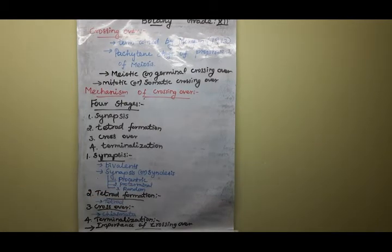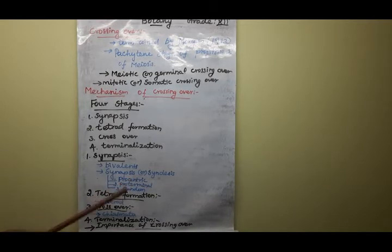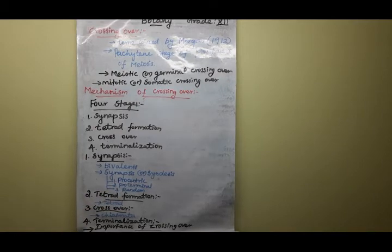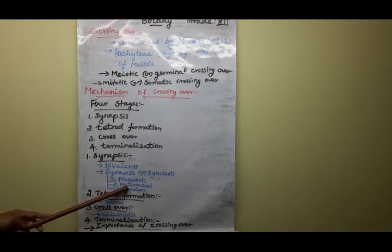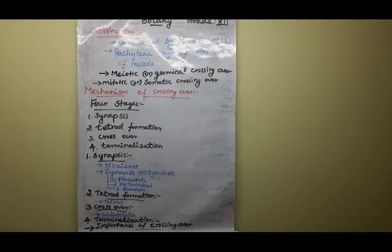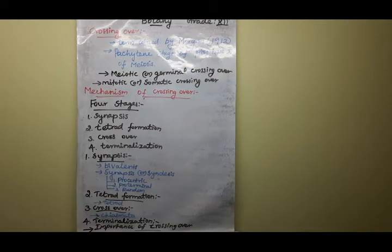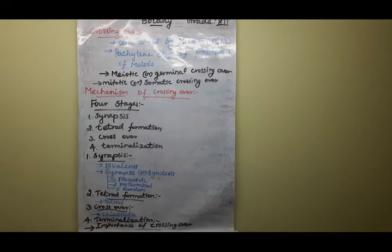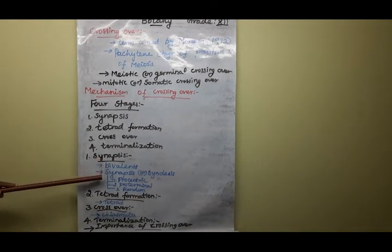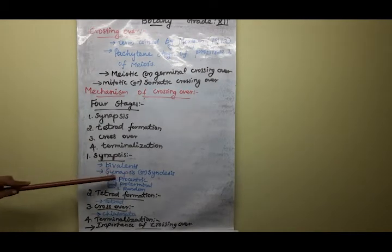Proterminal: terminal means end. The pairing starts from the telomeres — the end of the chromosome — that is called proterminal. Random synapsis means the pairing starts from anywhere on the chromosome. So synapsis means the bivalent formation — the pairing of homologous chromosomes. What are the three types of synapsis?